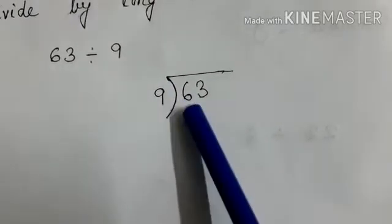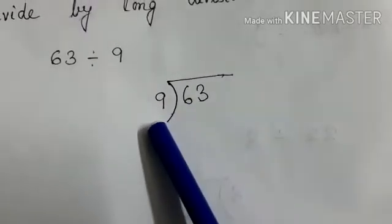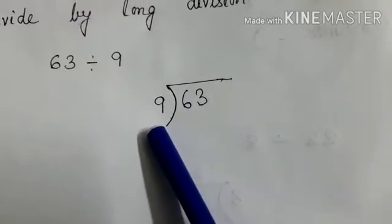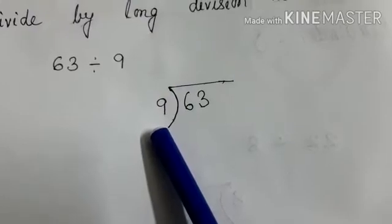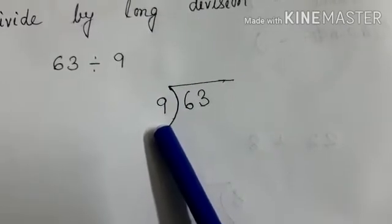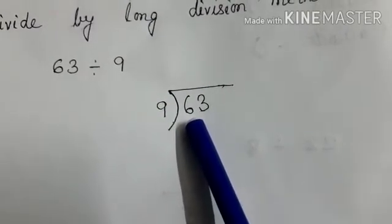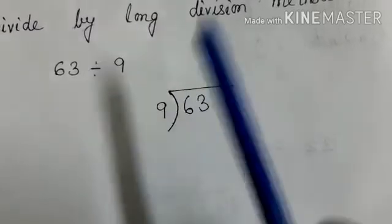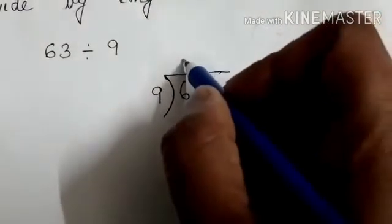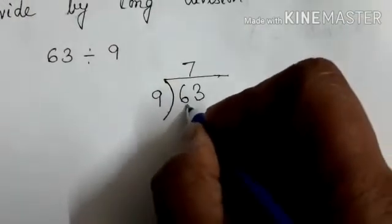So where we are getting 63 in the table of 9. Very good. 9 7's are 63. So we are getting 63 in the table of 9. So how many times? It is 7 times. 63.